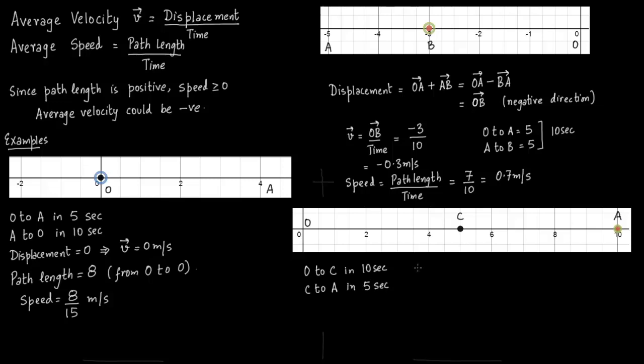So let us talk about velocity from C to A. So velocity from C to A is CA vector over time taken. Now time taken from C to A is 5 seconds given to us. So 5 divided by 5 is 1. So you are taking the time taken from C to A.